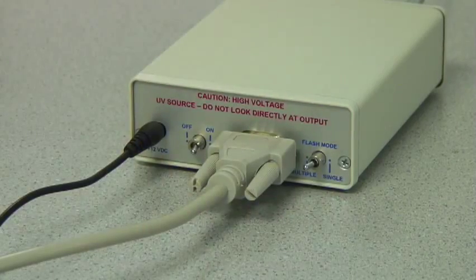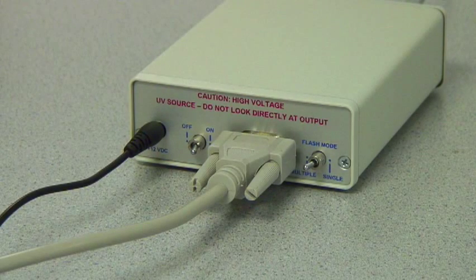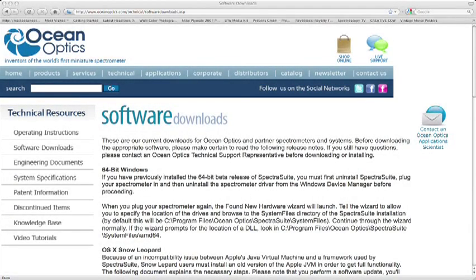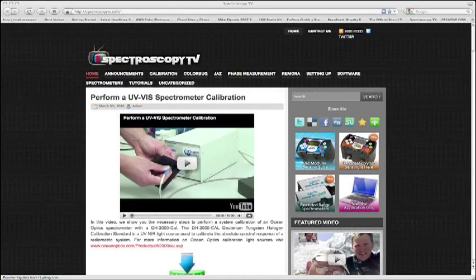In order to use your light source with your spectrometer, you'll need to configure the operating software. Before you go any further, be sure you have the latest version of SpectraSuite software. To verify the update, visit OceanOptics.com, click Technical, and then click Software Downloads. You can view our Getting Started with SpectraSuite videos all available on Spectroscopy TV.